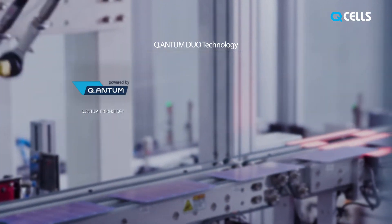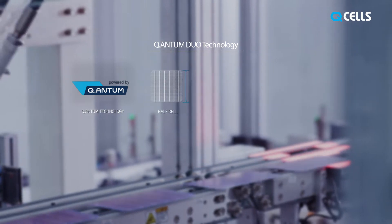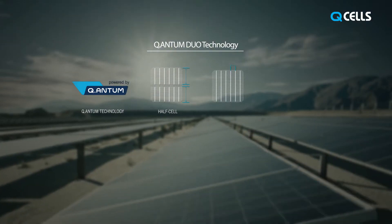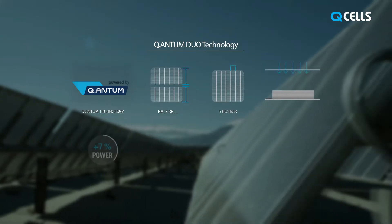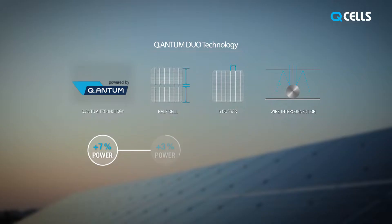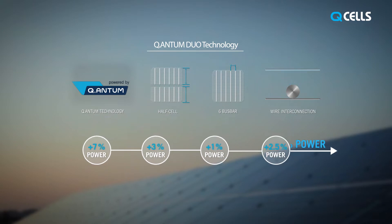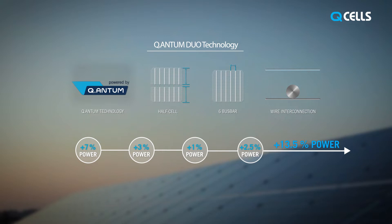In 2017, Qcells added half-cell technology, a six-bus bar design, and new innovative wiring technologies to form our advanced Quantum Duo technology. Quantum Duo solar modules deliver up to 13.5% higher yields than standard modules.